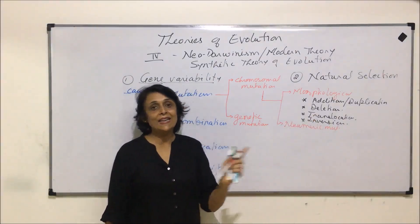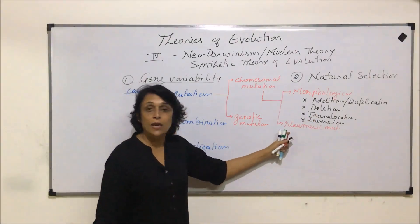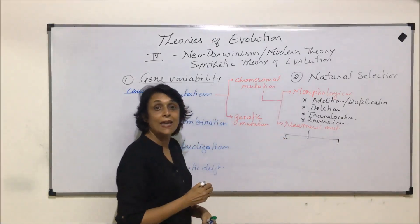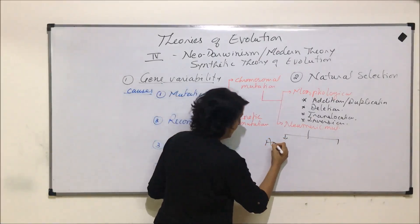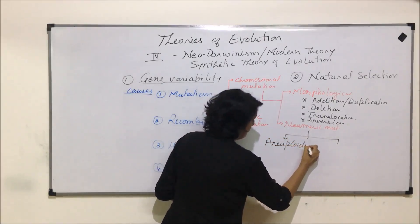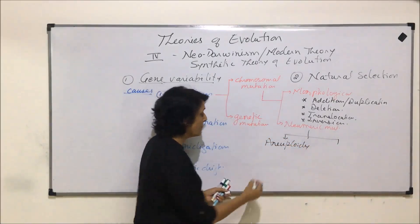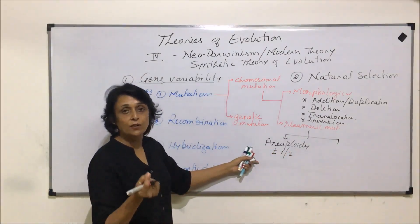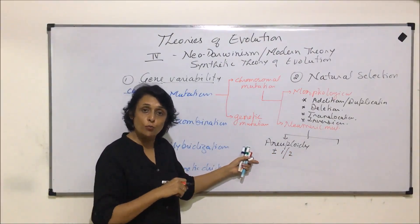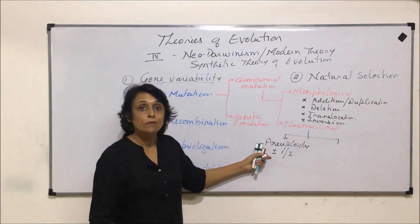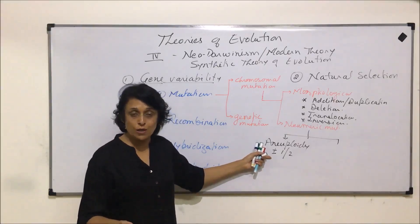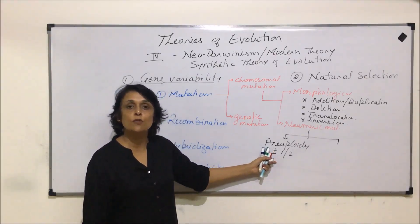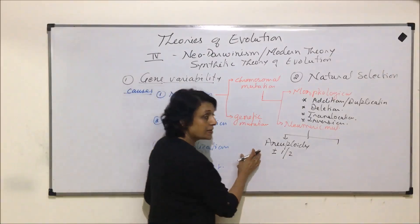In numeric mutations, we talked about two categories. One was aneuploidy, where the change in the chromosome number is plus minus one or two. That means either one chromosome gets added or two chromosomes are extra, or one chromosome is lost or both chromosomes are lost. In this we talked about terms like monosomy, nullisomy, trisomy, and tetrasomy. This is aneuploidy.